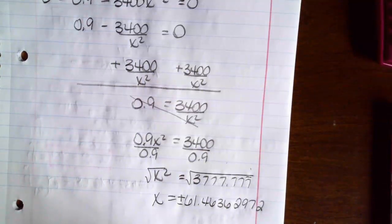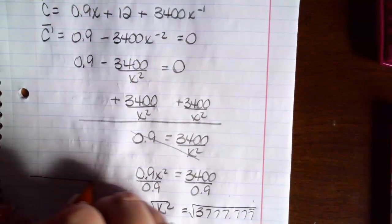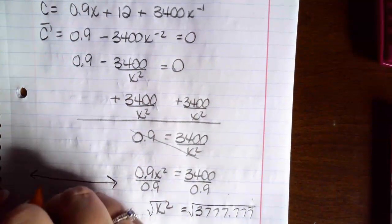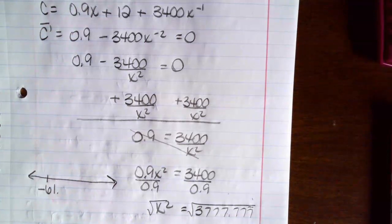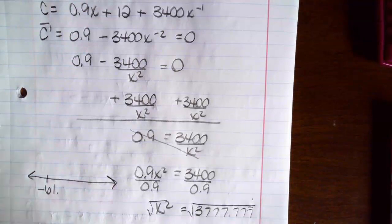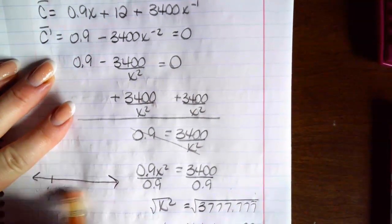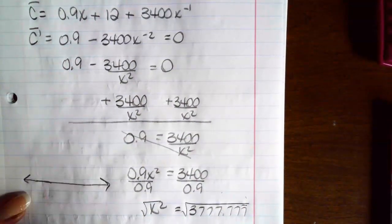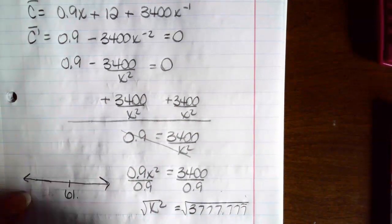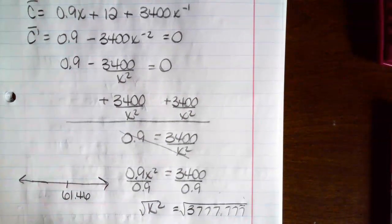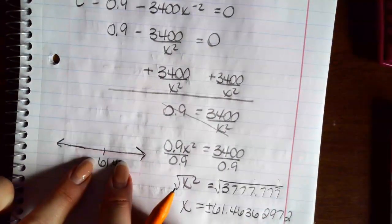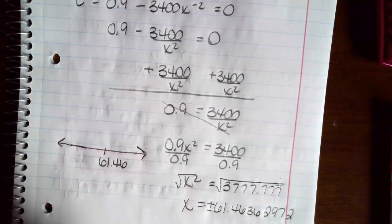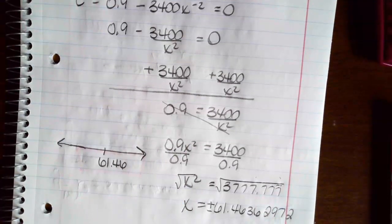Okay, so we want to minimize the average cost per float. So I'm going to let you figure out this one. We've got a negative 61. Well, that's kind of ridiculous because we can't have a negative number of floats per week. So we're going to use a positive 61.46. And then you just need to get your test points on either side and decide if this is a max or a min. And you'll want to round your answers to three decimal places.